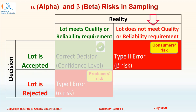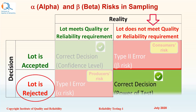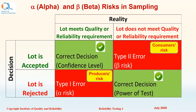The last possible decision is that the lot is rejected when the lot does not meet quality or reliability requirements. This would again be a correct decision, but the probability of this correct decision is called power of test. Observe the matrix carefully.